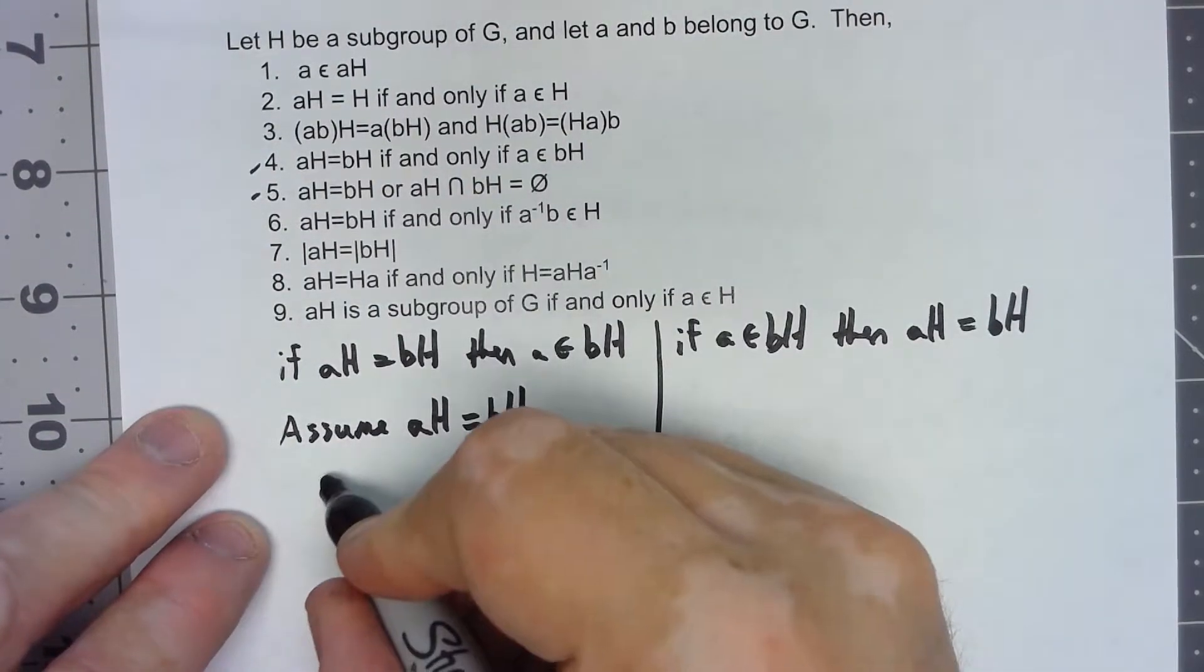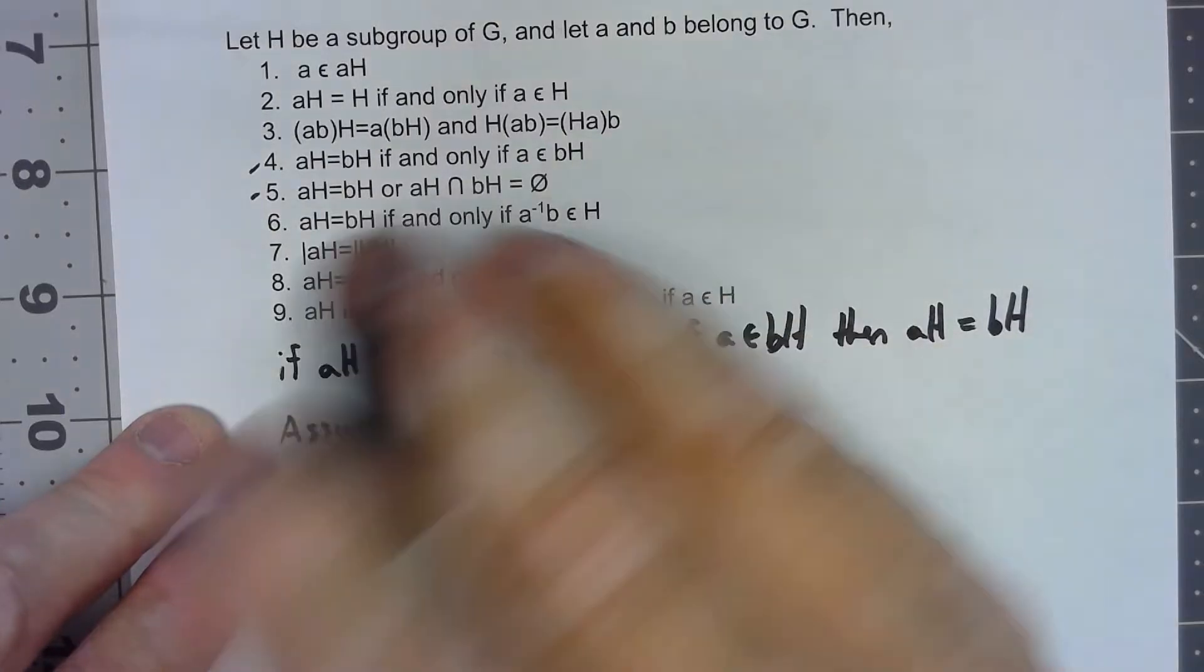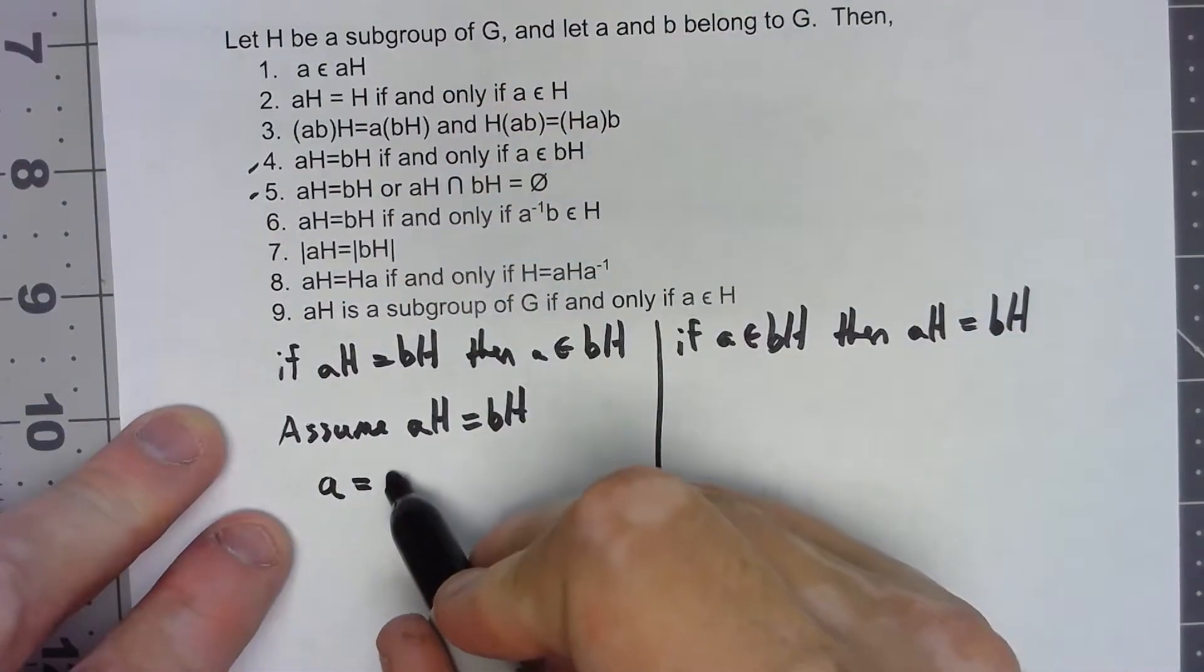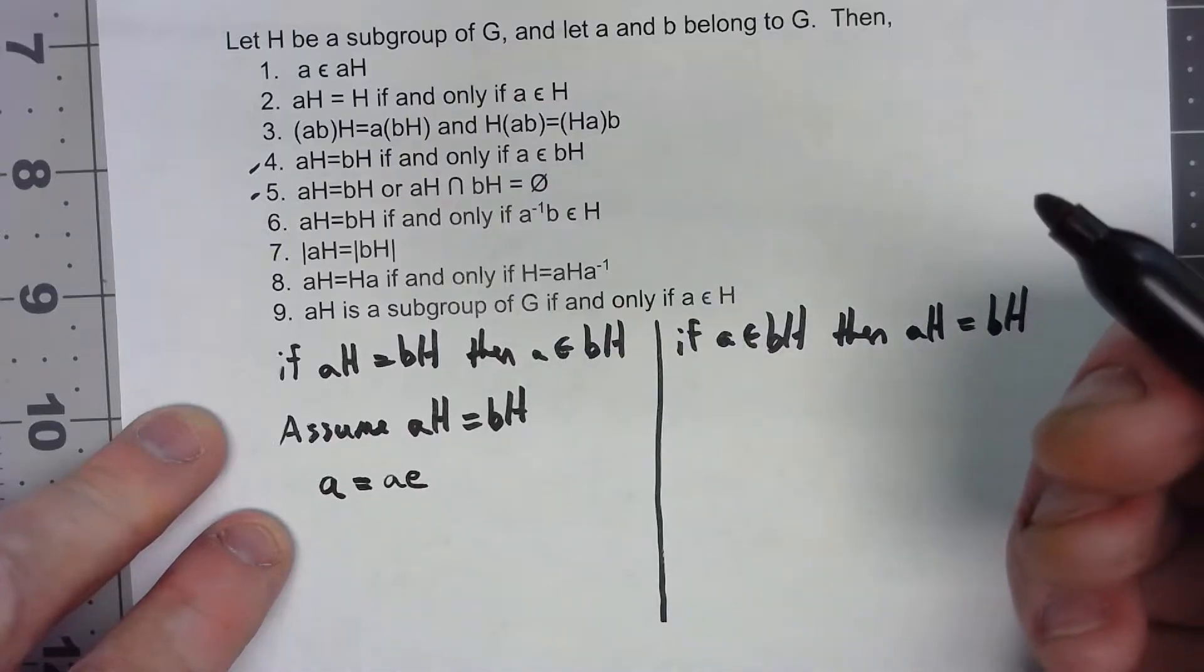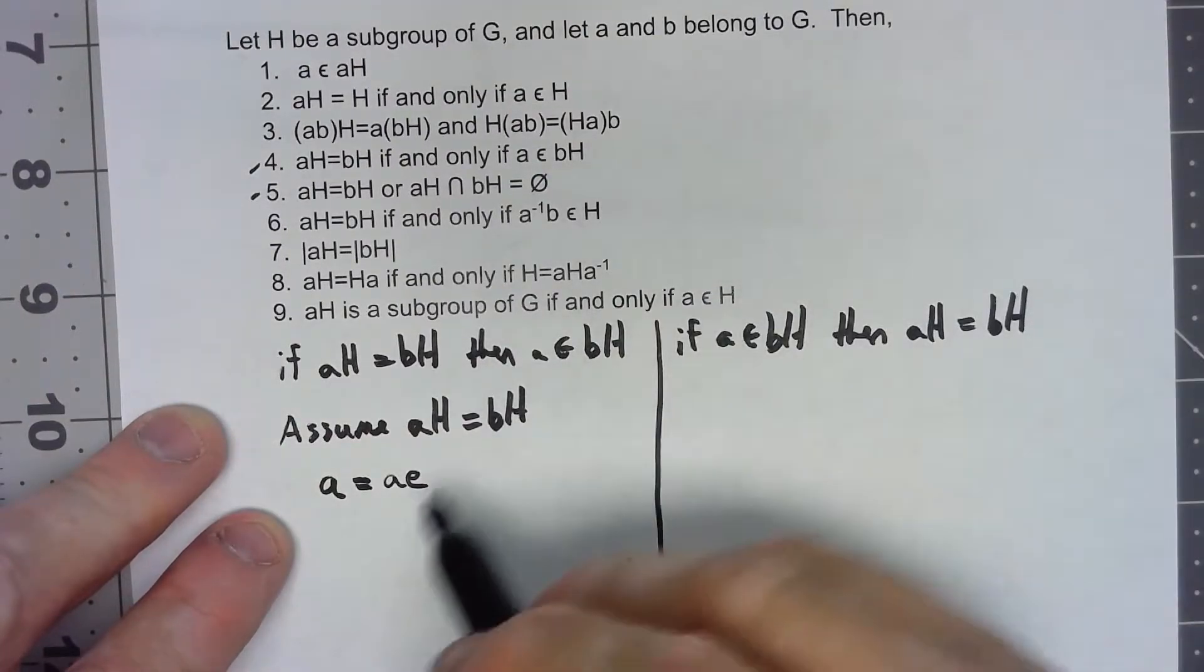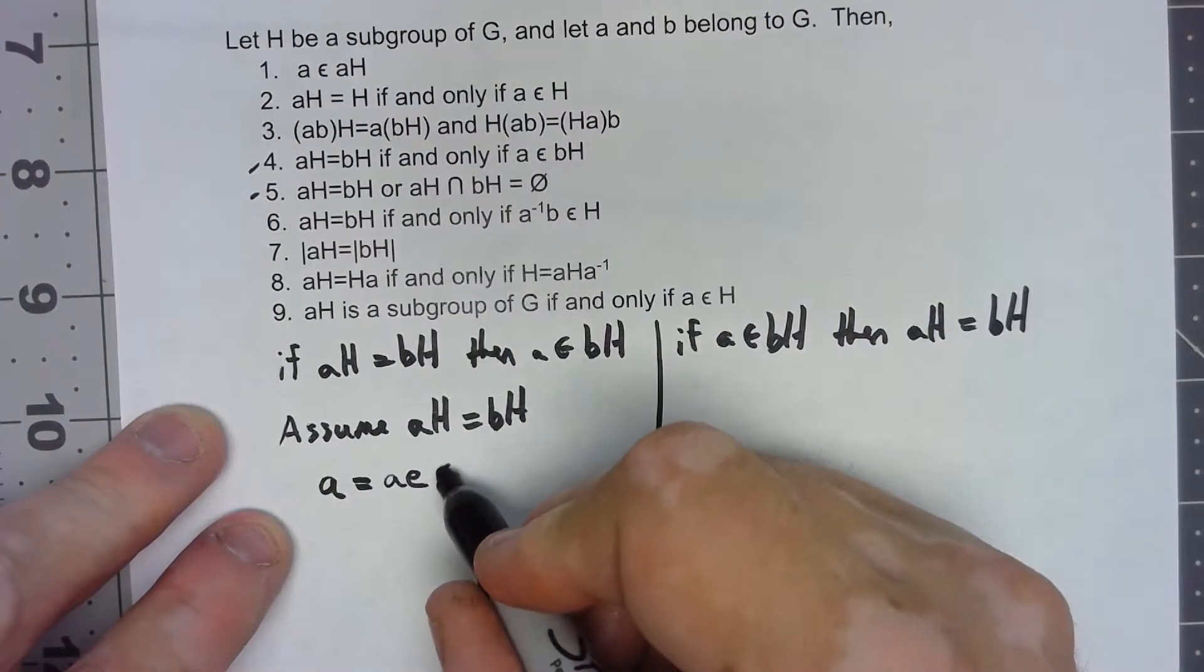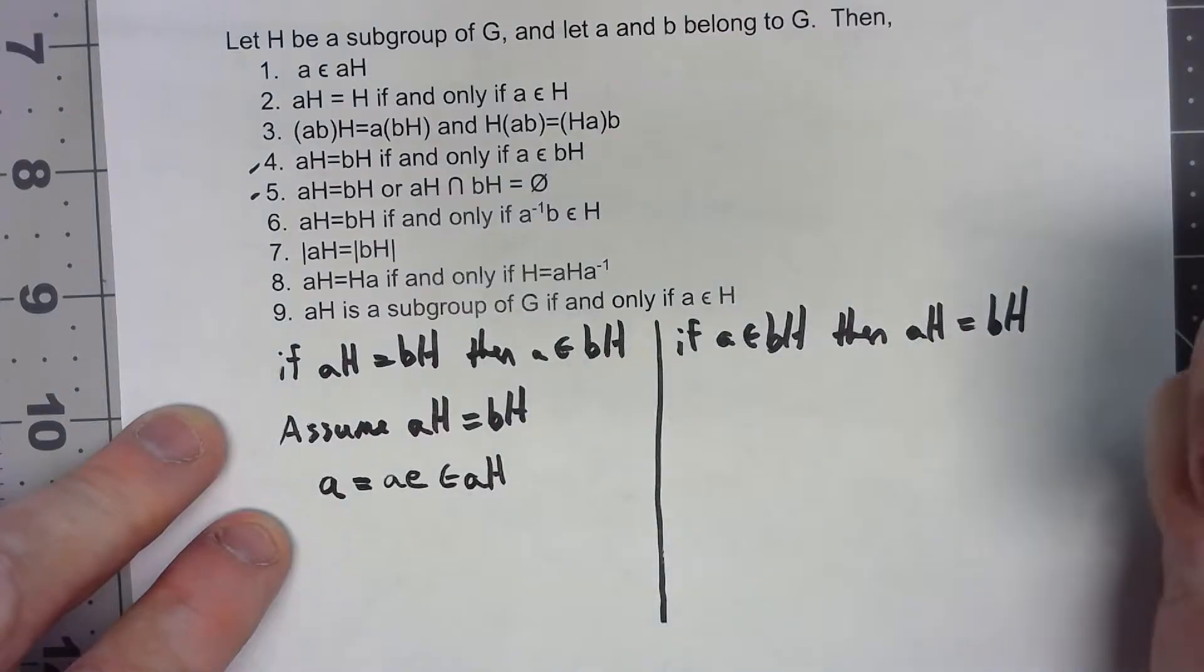Well then notice that A, just the element A, is equal to A times E by our group properties and by what an identity is. So that's A times an element of H, so A has to be in AH.